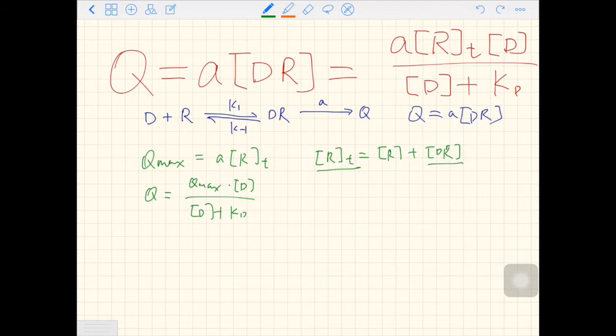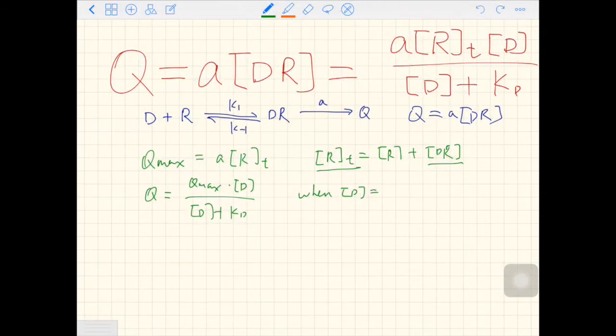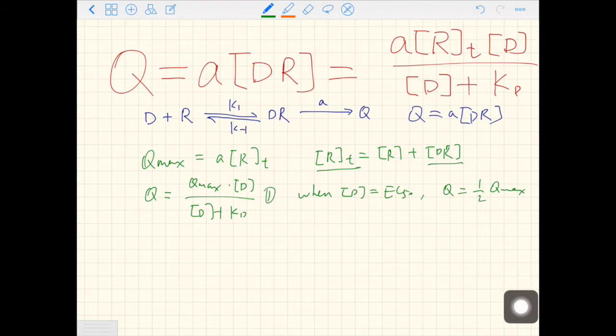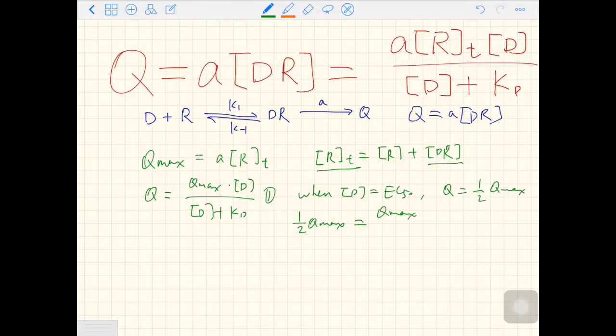Let's put it in a mathematical way. When D equals EC50, Q equals one half Q max. Let's put these two equations into equation number one and see what we get. Replace Q with half of Q max, and you have Q max on the right times EC50 over EC50 plus KD.